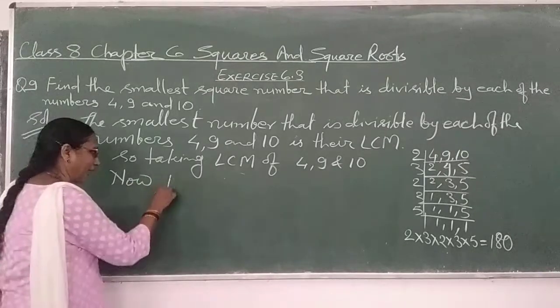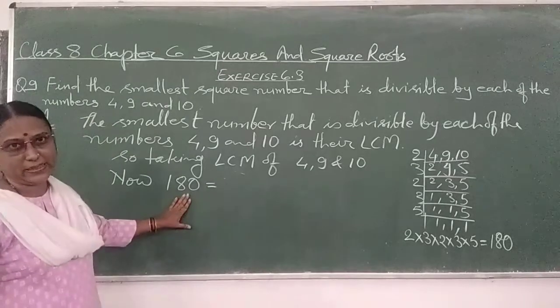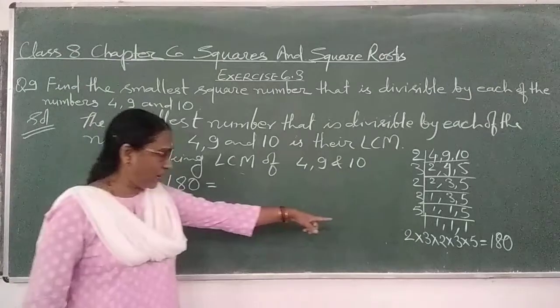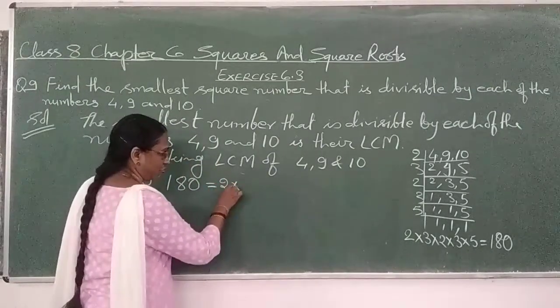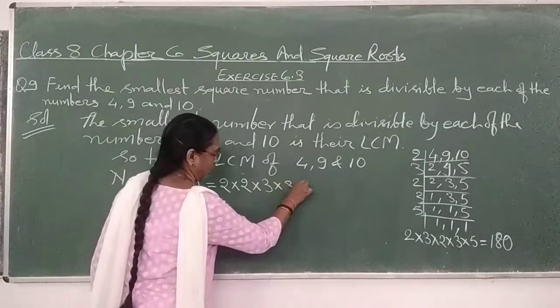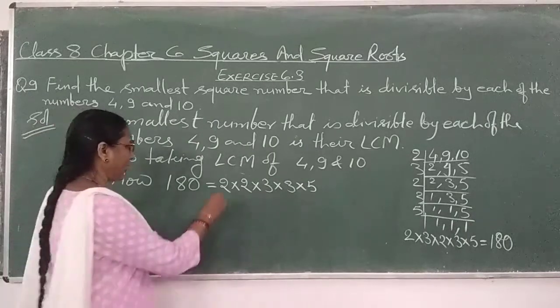Now factorizing of this number. Isko haam factorize karege. So, 2, 2 times hai. 3, 2 times hai. 5, 1 time hai. Yaam haam naik kareg hai.